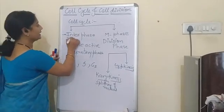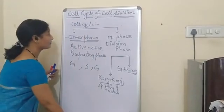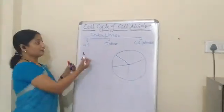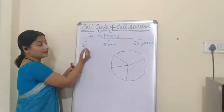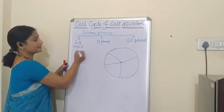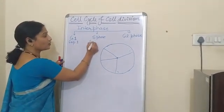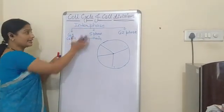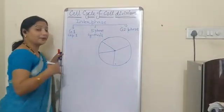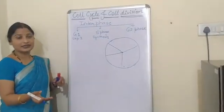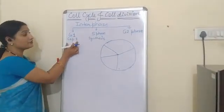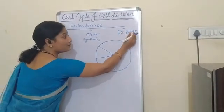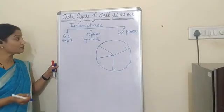Interphase can be divided into three parts: G1 phase, also called gap 1 phase; S phase, also called synthesis phase; and G2 phase, also called gap 2 phase. In interphase, all the phases prepare something for the next phase. G1 phase prepares for the synthesis phase, synthesis phase prepares for G2 phase, and G2 phase prepares for the multiplication or division phase.